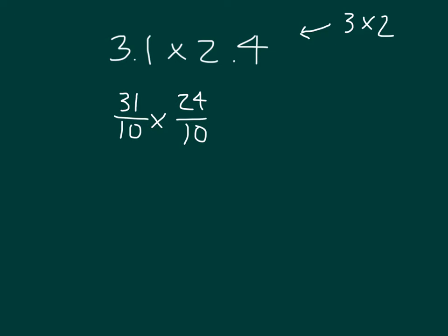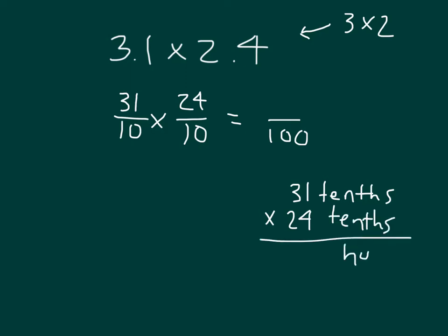Let's see what our actual answer is. What do we get when we multiply tenths by tenths? We get hundredths. Let's work out the rest of this problem using that unit form. So we had 31 tenths times 24 tenths, so we know that we're getting hundredths.